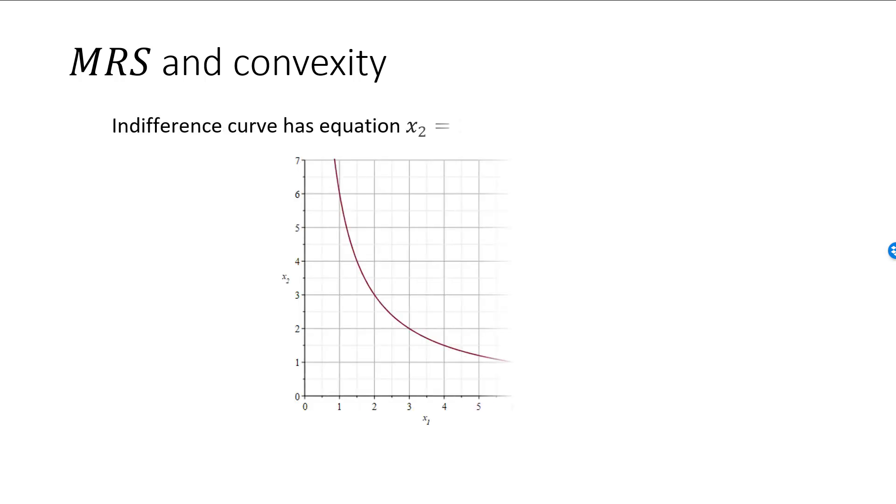Let's see what we can say about MRS when we have convex preferences. Consider an indifference curve described by the function x2 equals 16 divided by x1.